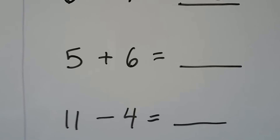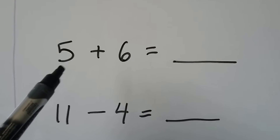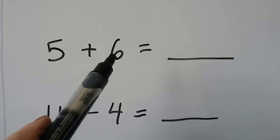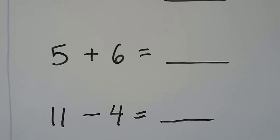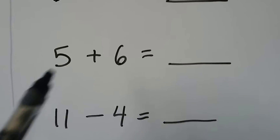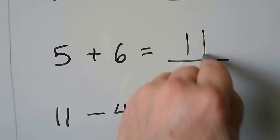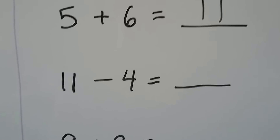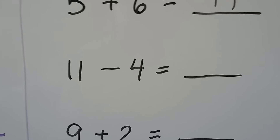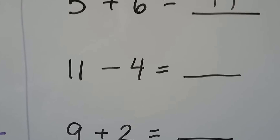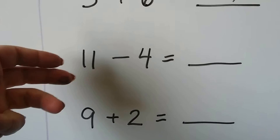5 plus 6 — we could use doubles plus 1 again. We can do 5 plus 5 and add 1 more, because 6 is 1 more than 5. 5 plus 5 is 10, and 1 more is 11. For 11 minus 4, we can start at 11 and count back 4: 11, 10, 9, 8, 7.